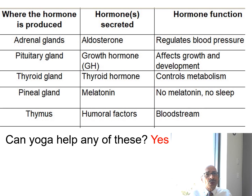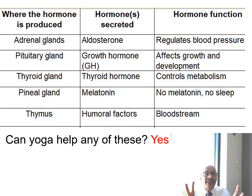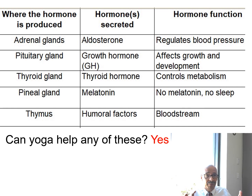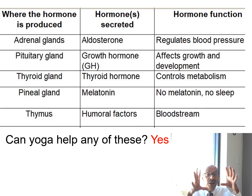Some examples of where hormones are produced and their effects: in the adrenal gland, hormones regulate blood pressure; in the pituitary gland, growth hormones affect the growth and development of the body — if your pituitary gland stops functioning, you stop growing physically. Through the thyroid glands, thyroid hormones control the body's metabolism.